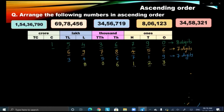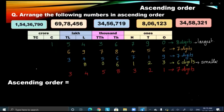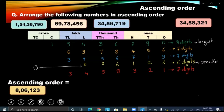Here we have one more seven-digit number, and the fourth number is a six-digit number. The last number is also a seven-digit number. Now let us decide the order. The six-digit number will be the smallest number and the eight-digit number will be the largest number, so the smallest number will come in first place. Let us put that number in first place.